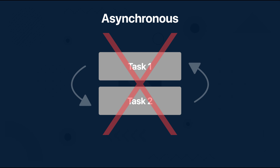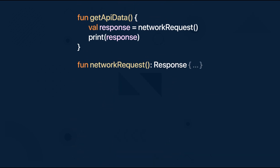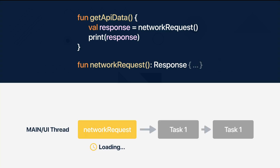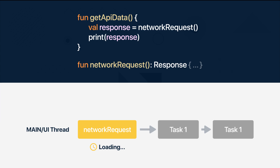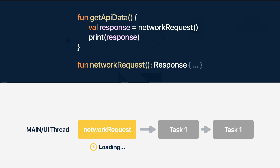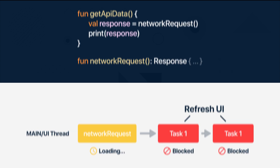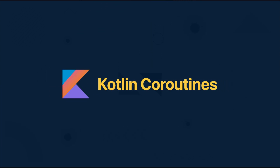Imagine that we have a function named network request that does all the heavy work. When we synchronously run this function in our application it will block our main thread and our UI might freeze and get unresponsive, because our application will block the main thread until the network request function is done. So our screen will not be able to refresh itself until that function is finished, and blocking our main thread is a bad idea. Instead all our non-UI related stuff needs to be moved to a different thread, and that's where Kotlin coroutines comes in.